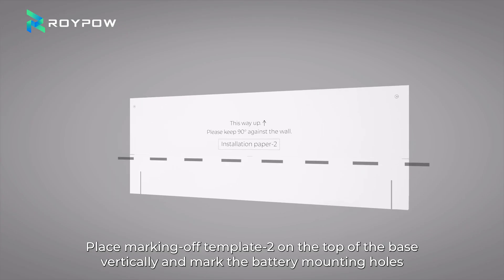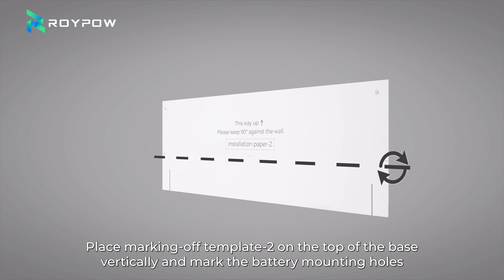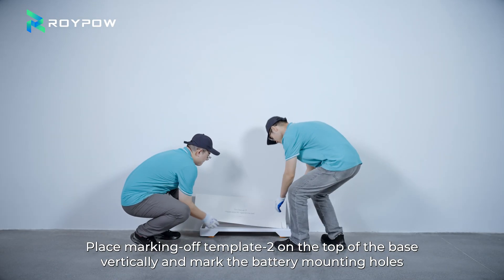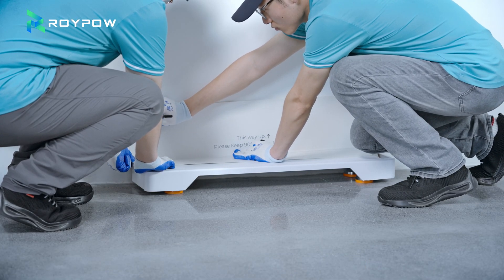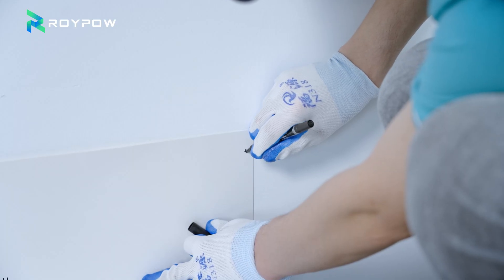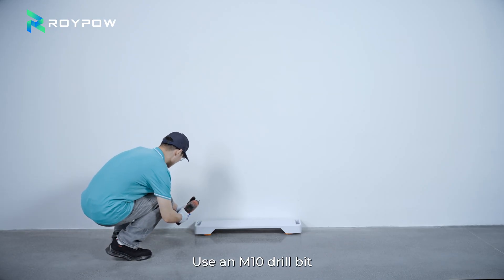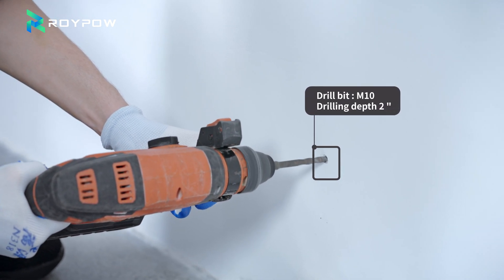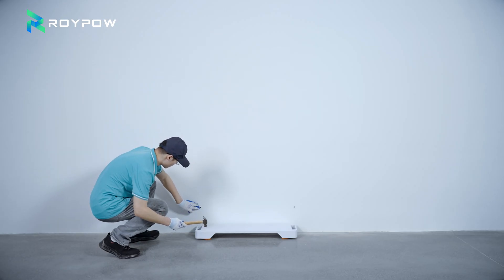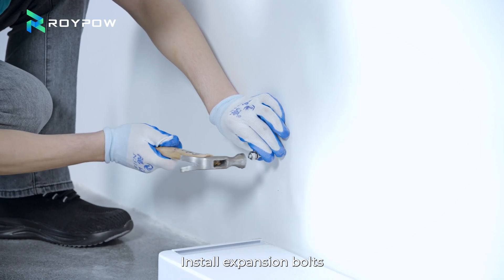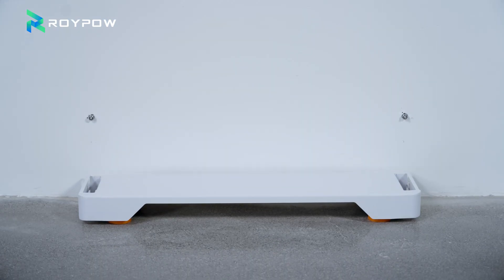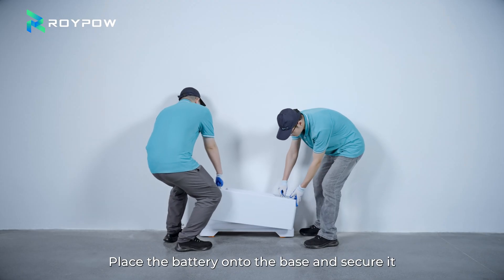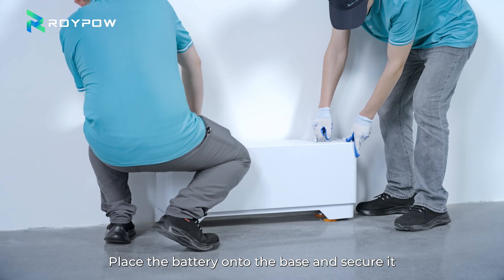Place marking off template two on the top of the base vertically and mark the battery mounting holes. Use an M10 drill bit. Align with the hole positions and drill. Install expansion bolts.